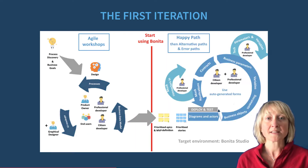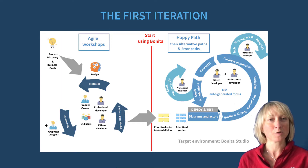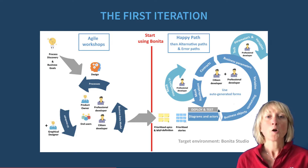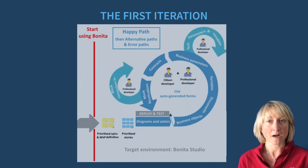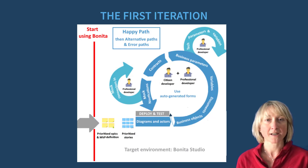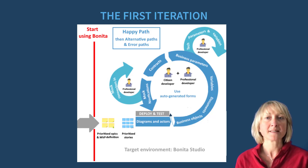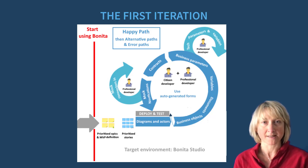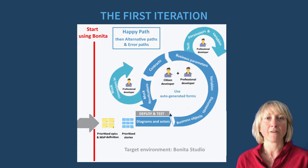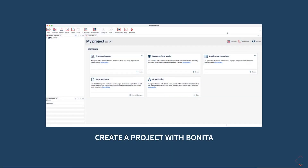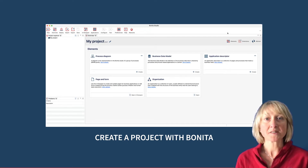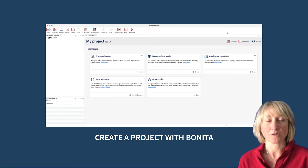When this first step is done, you can start using Bonita Studio to implement it. We recommend using agile methodologies in your project and defining a happy path for the first iteration. This happy path represents the simplest executable process with the highest possible value. It is time to start your project with Bonita Studio.